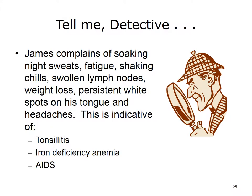Now that you know something about the lymphatic and immune systems, see if you can solve the mystery that appears on this slide. James complains of soaking night sweats, fatigue, shaking chills, weight loss, swollen lymph nodes, persistent white spots on his tongue, and headaches. This is indicative of: tonsillitis, iron deficiency anemia, or AIDS?